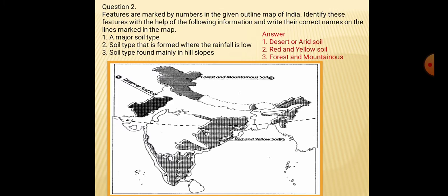Question number 2: Features are marked by numbers in the given outline map of India. Identify these features with the help of the following information and write their correct names on the lines marked in the map. Three questions are given. First, a major soil type — the number is at the place of Rajasthan, so desert or arid soil is found there.